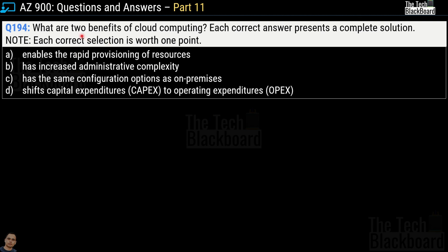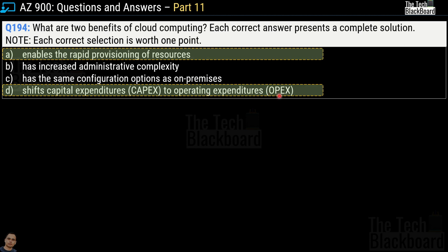Question number 194: what are the two benefits of cloud computing? Each correct answer presents a complete solution. Options are: enables the rapid provisioning of resources; has increased administrative complexity; has the same configuration options as on-premises; or shifts capital expenditure to operating expenditure. The correct answers are option A and option D.